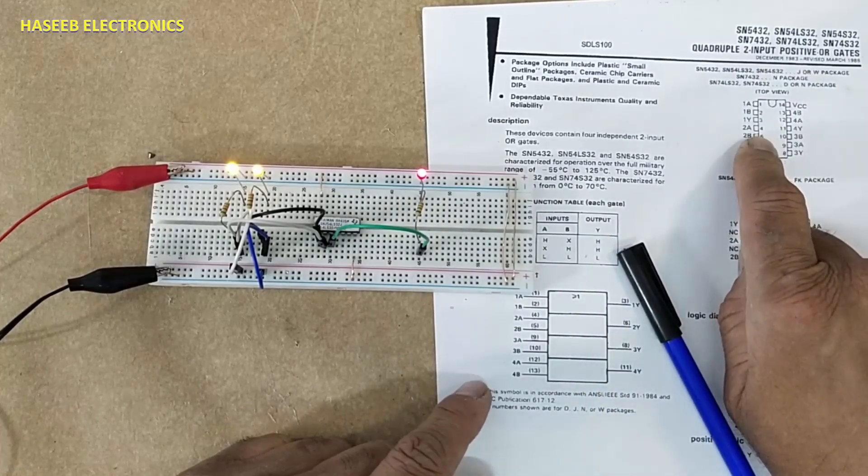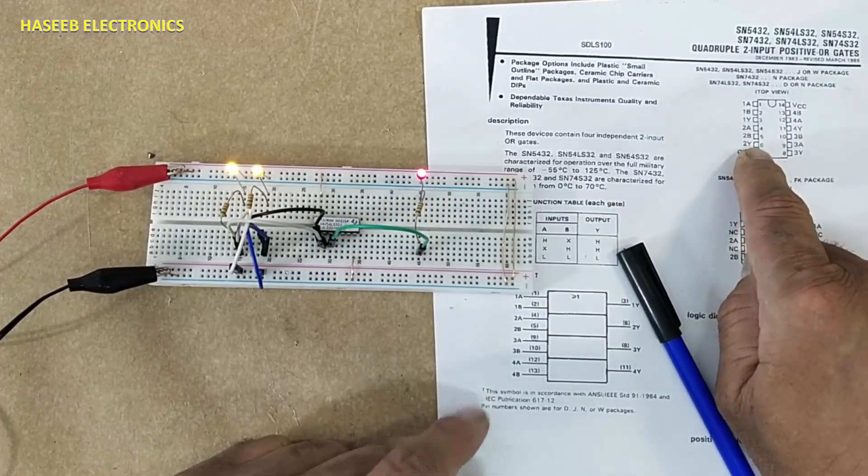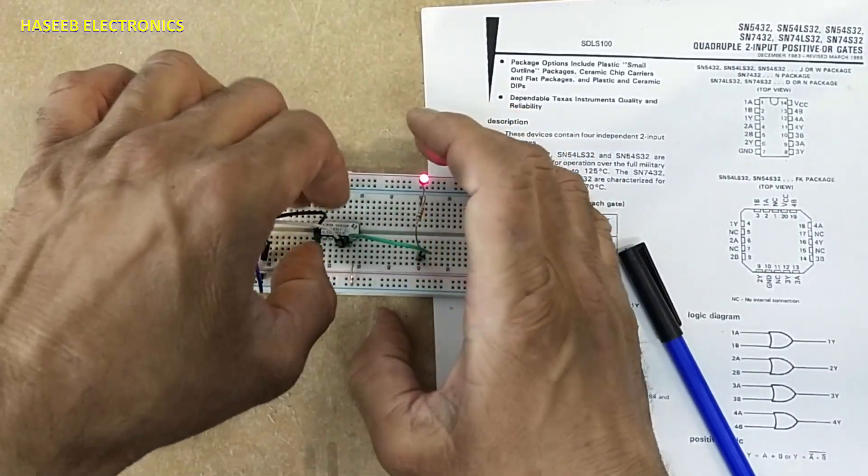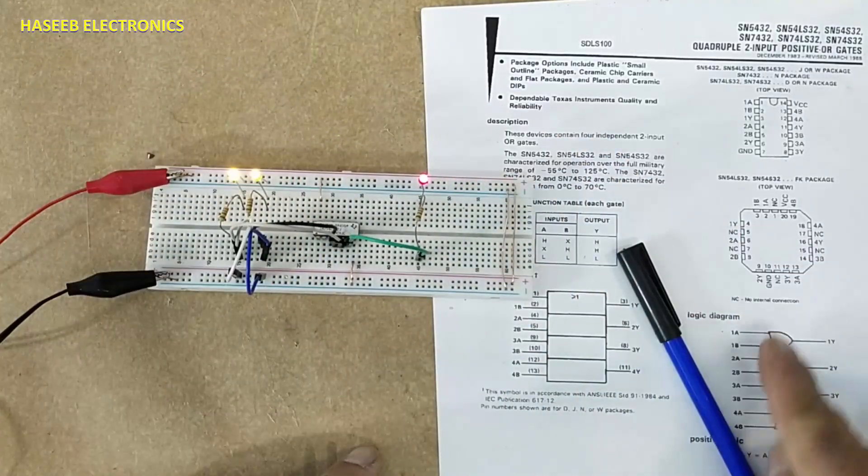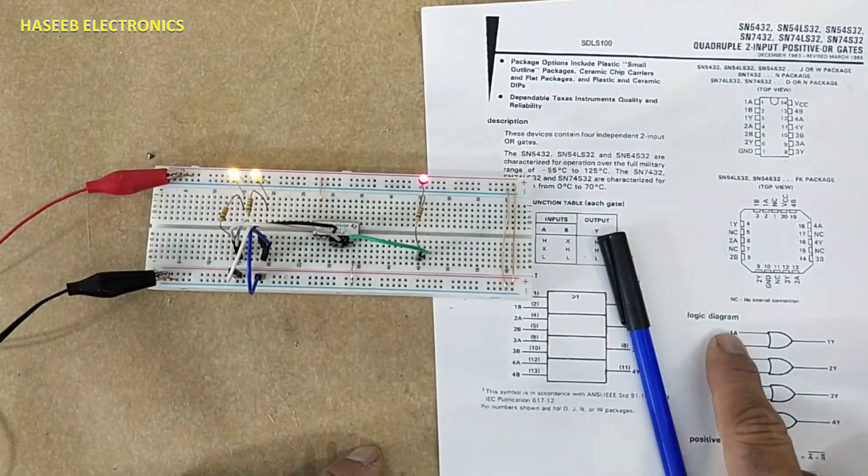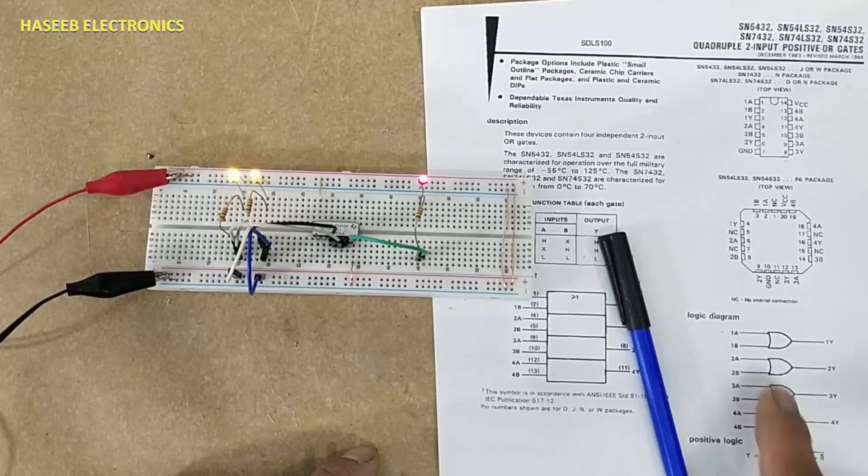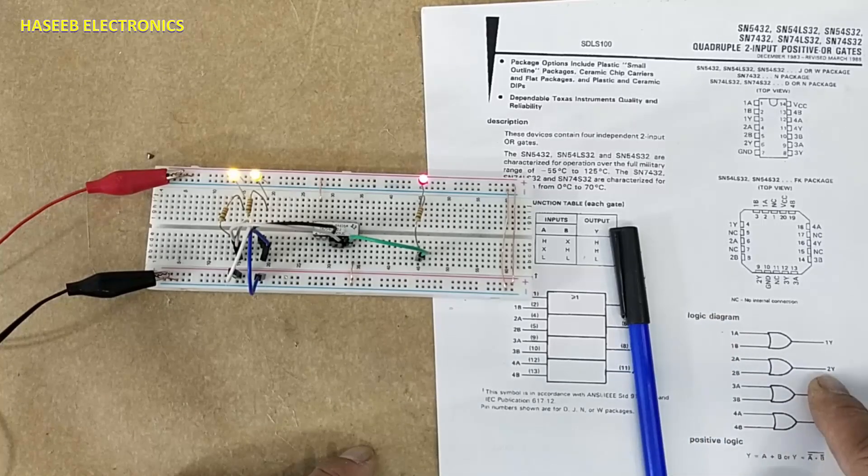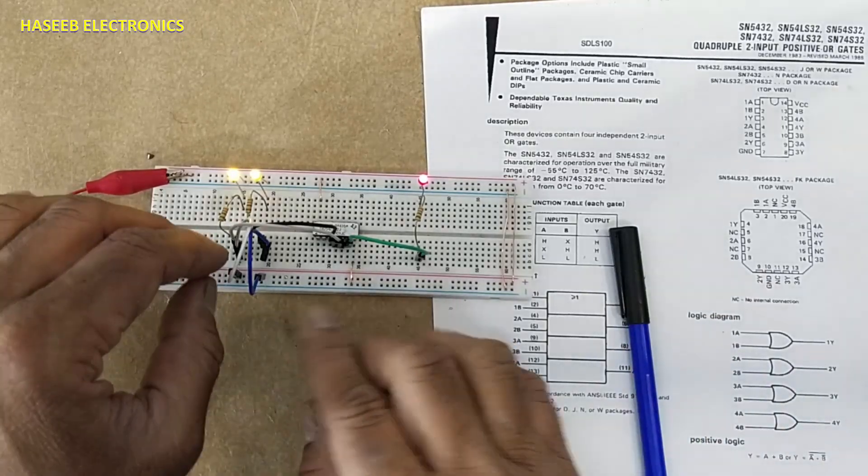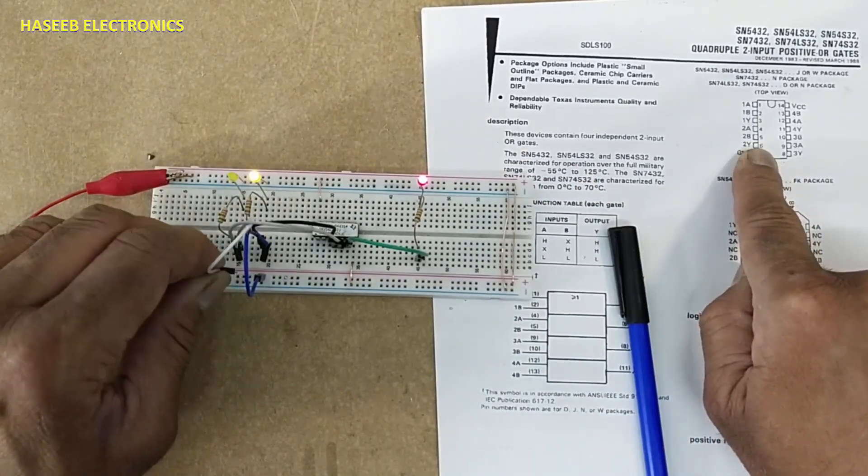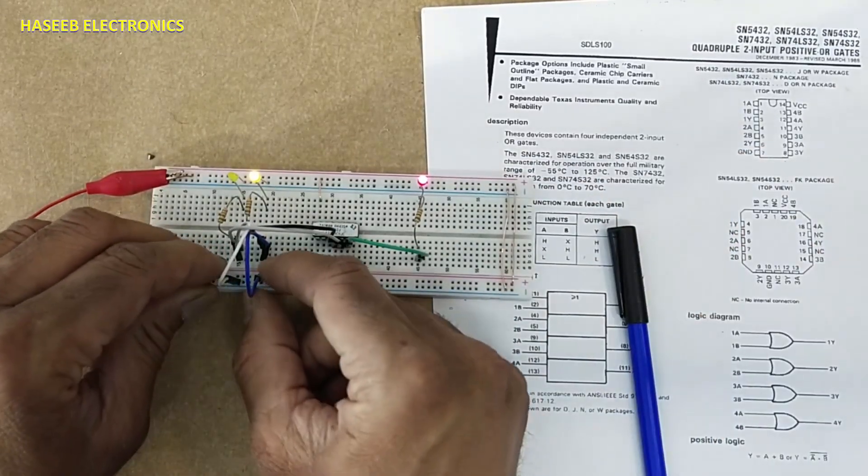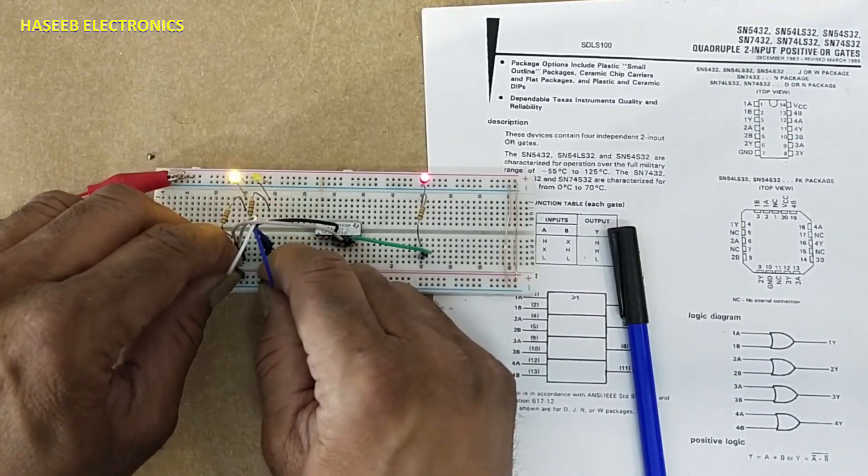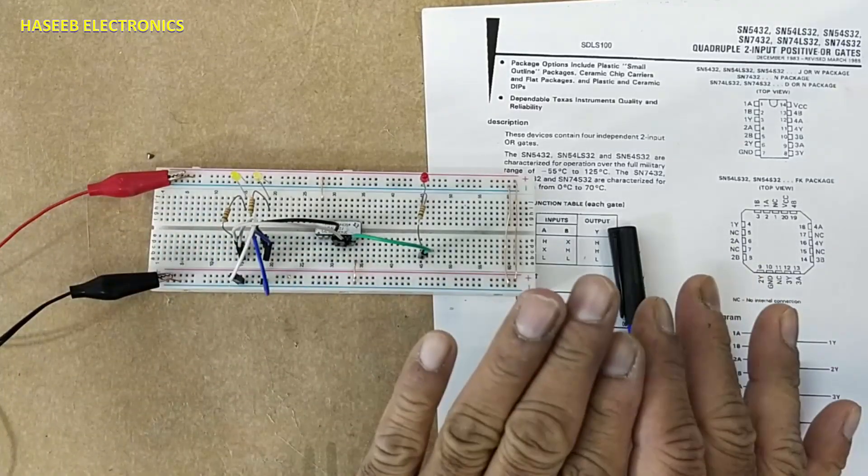Same way we can monitor the function of the second gate. Pin six is output, four five input. All gates are independent. If we will apply input at first two pins, other gates will not respond to this input. Each gate will behave on its input and it will provide its output. Now we are taking output from pin number six. Any input high, output high. All inputs are high, output high. All inputs are low, the output is low.